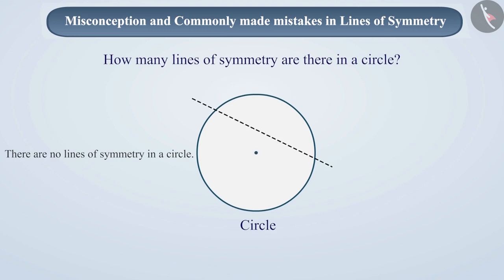Some students draw lines which don't pass through the center and hence, the two divided parts don't cover each other properly. Hence, they conclude that there are no lines of symmetry in a circle. But this is a wrong understanding.